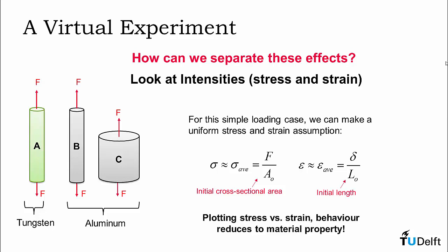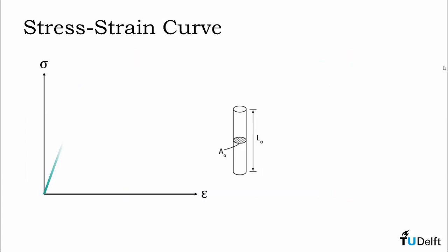Using these assumptions, we can now plot the stress-strain behavior and reduce stiffness to a material property. If we plot the stress-strain behavior for a typical material until failure, we will get a curve similar to the one shown here.